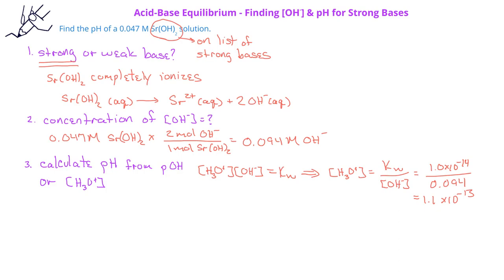Now that we have the hydronium ion concentration, we can do pH equals negative log of the hydronium ion concentration, or negative log of 1.1 times 10 to the minus 13, to find that this strontium hydroxide solution has a pH of 12.97.